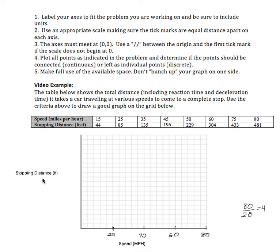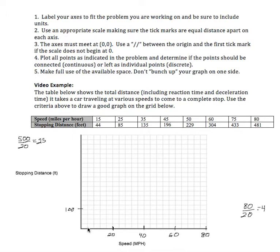Now let's look at our vertical axis. It goes from 0 to 481, so I'm going to call that 500. If I take 500 and split it over 20 tick marks, that gives me tick marks of distance 25, so every 4 of those would be 100. It's really important that when you make your graph, the distance between each tick mark on each axis is uniform — in this case, 4 on the horizontal.